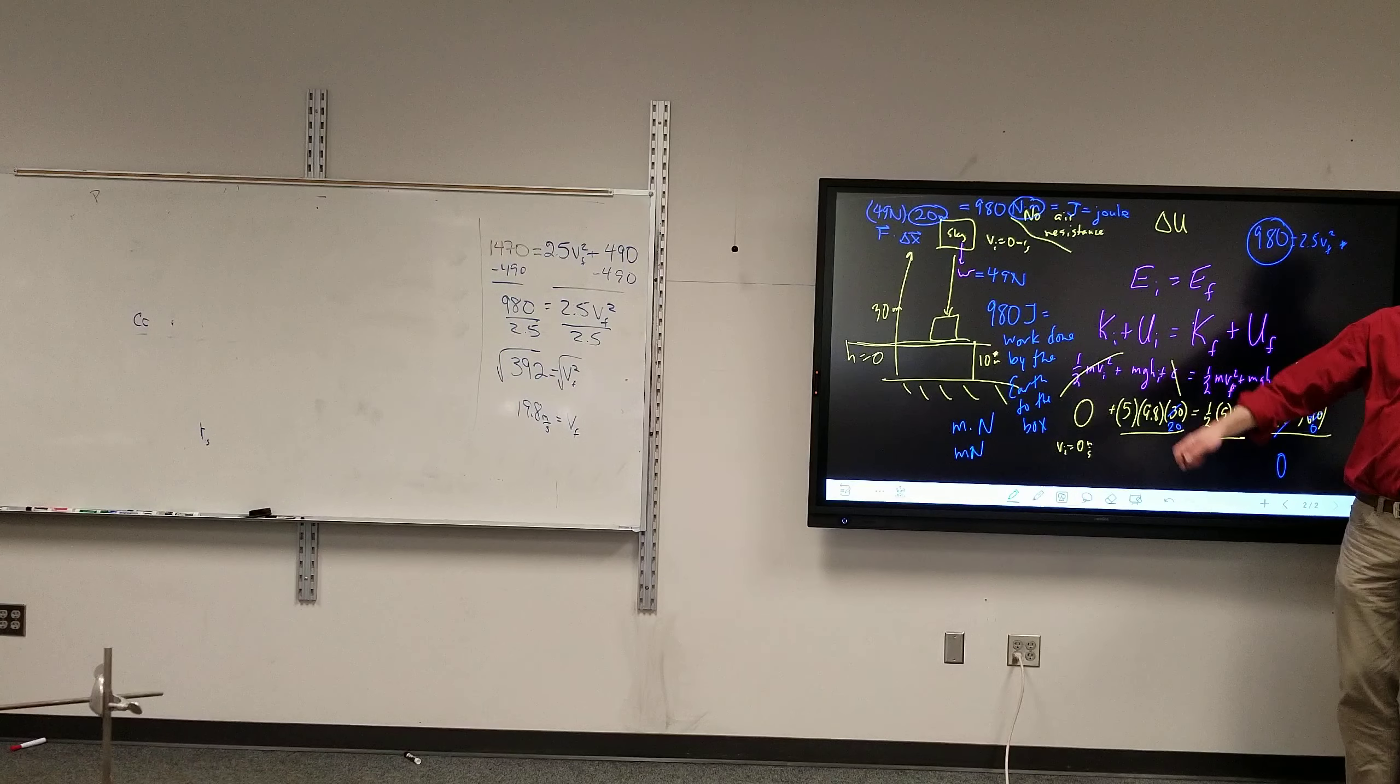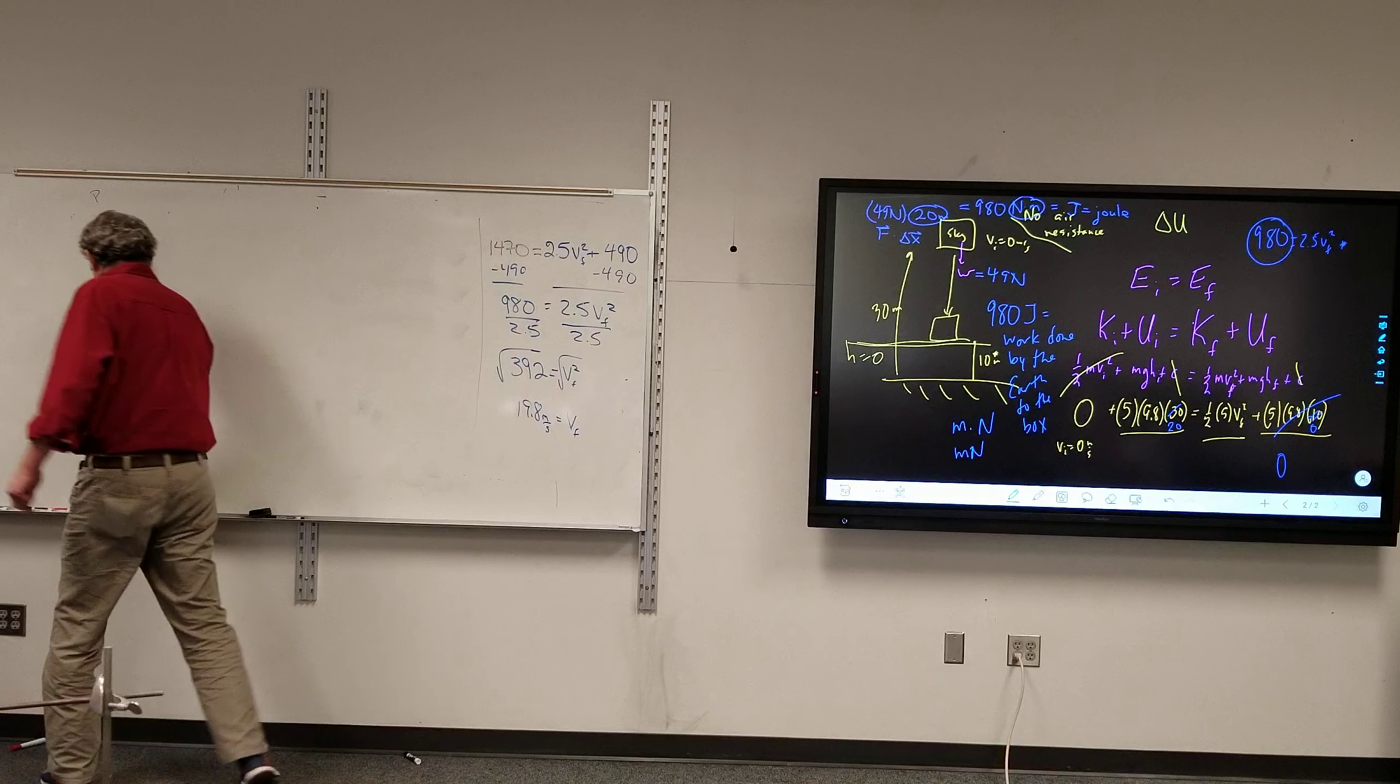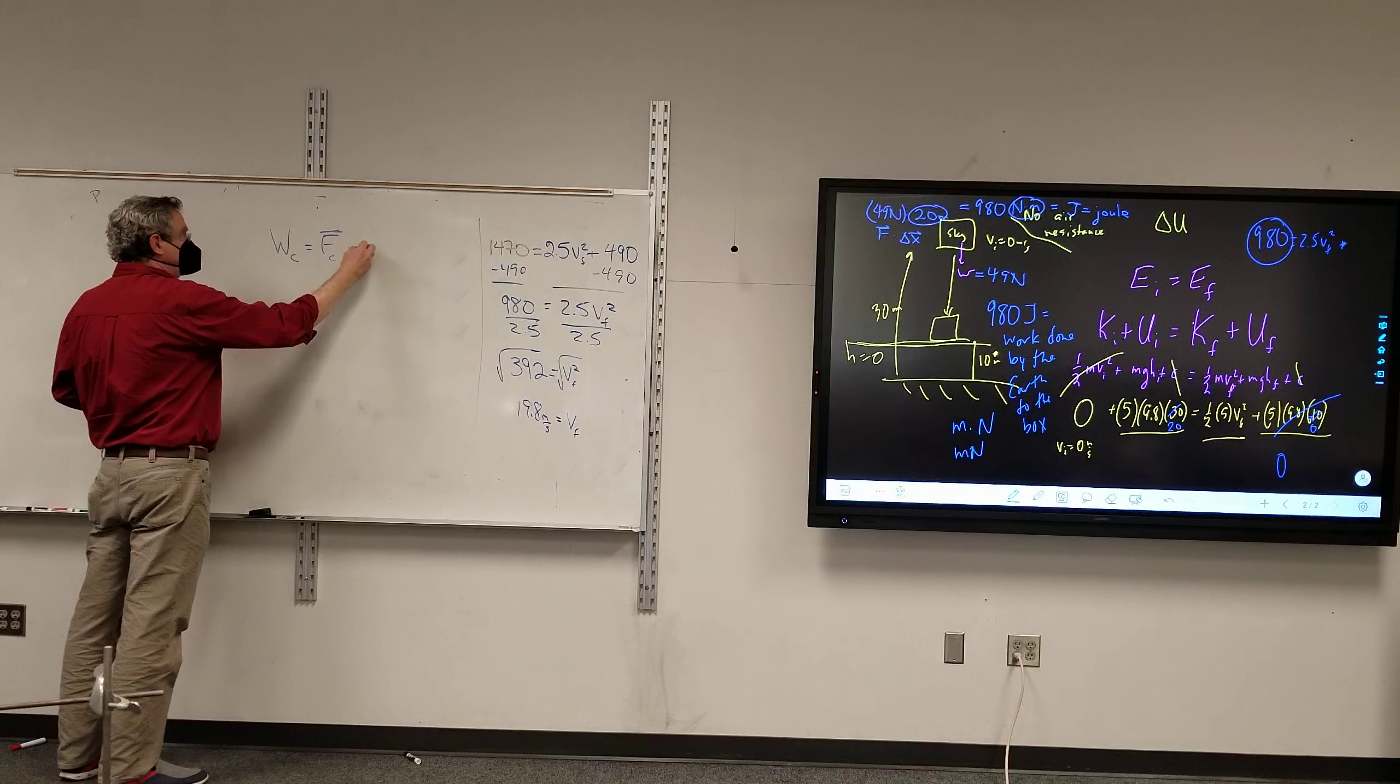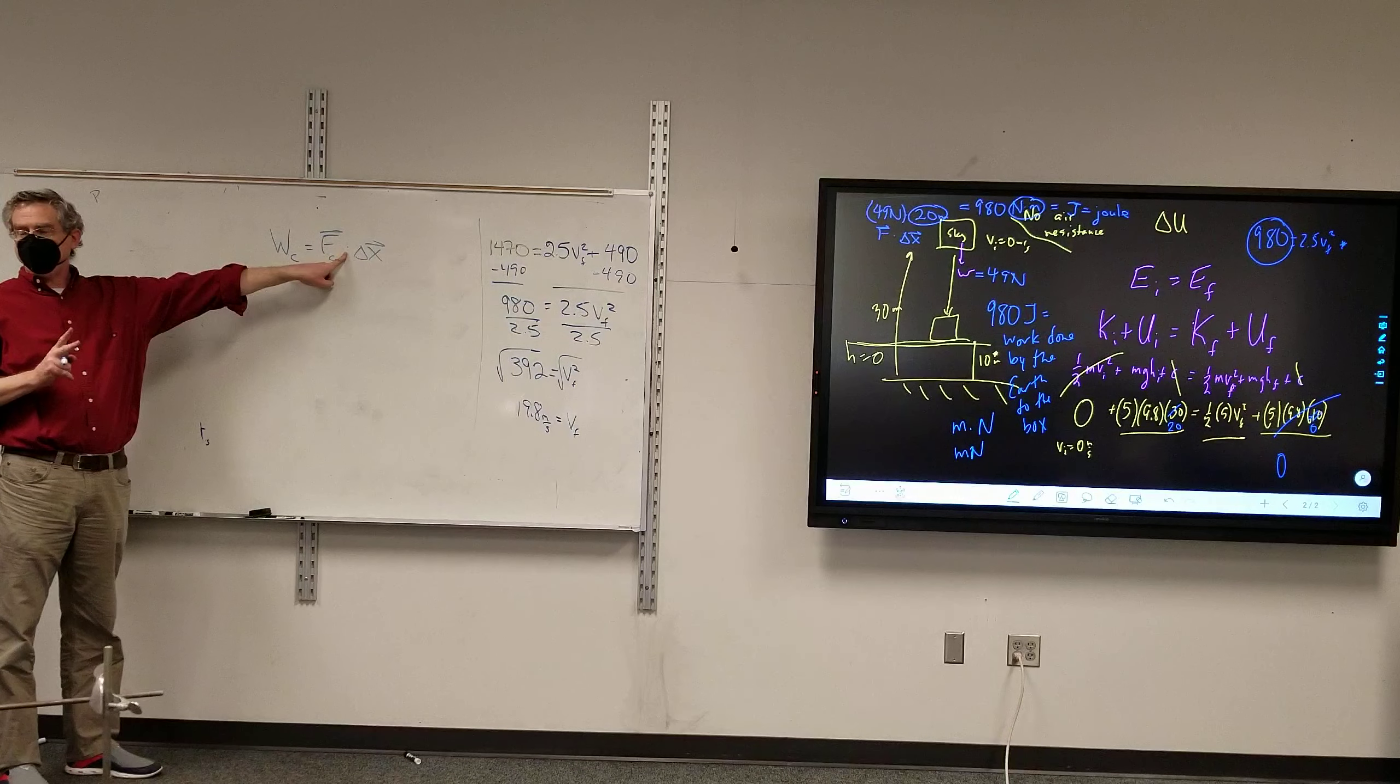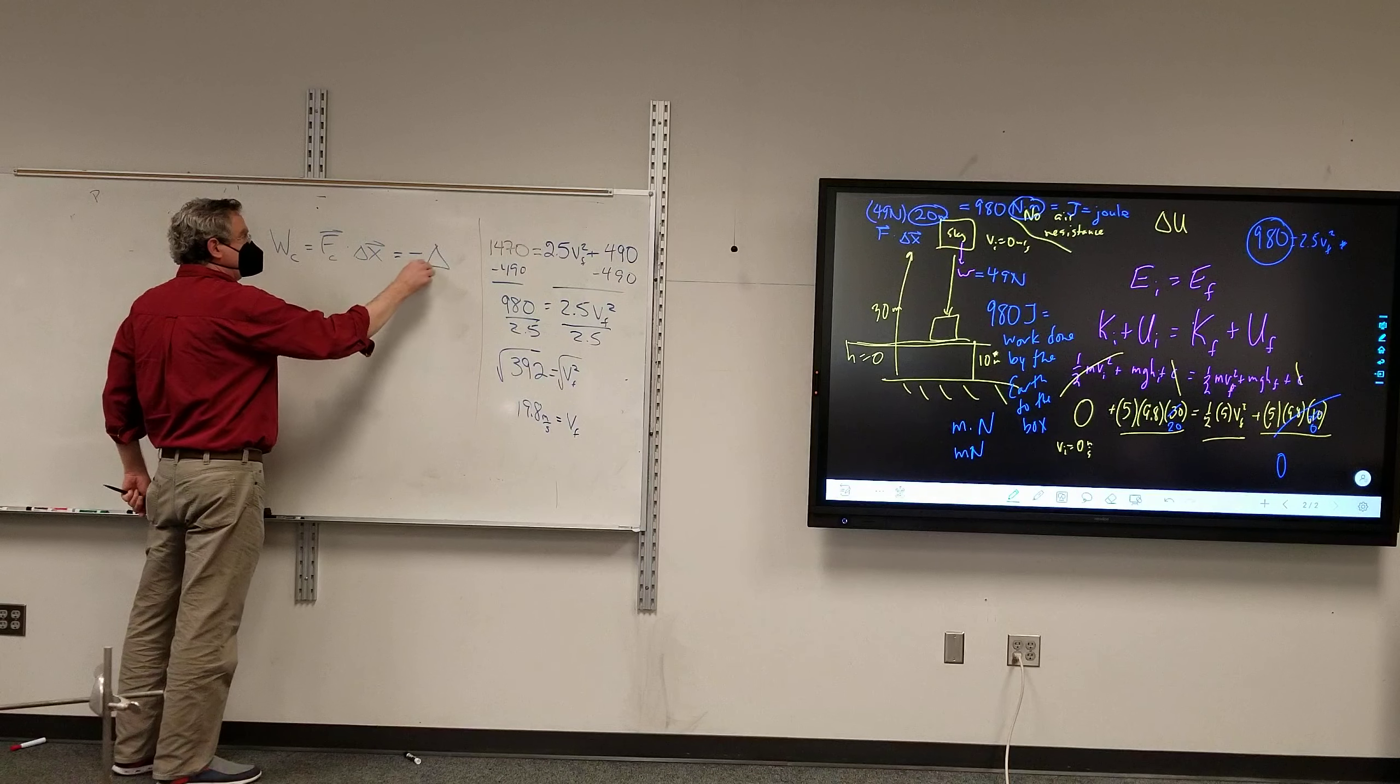It turns out there's a relationship between work and energy. We got this from the change in potential energy. This comes from work. And so we have, it turns out, that conservative work, which is conservative force times displacement - there's a dot in between here, it needs to be a dot. There's two ways of multiplying vectors: dot products and cross products. This is a dot product.